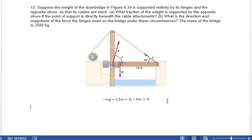All that adds up to zero. So, what we're left with is f shore is mg times 1.5 over 9. 1.5 over 9.